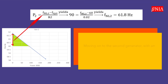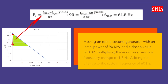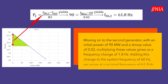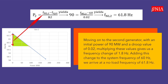Moving on to the second generator, with an initial power of 90 MW and a droop value of 0.02, multiplying these values gives us a frequency change of 1.8 Hz. Adding this change to the system frequency of 60 Hz, we arrive at a no-load frequency of 61.8 Hz.